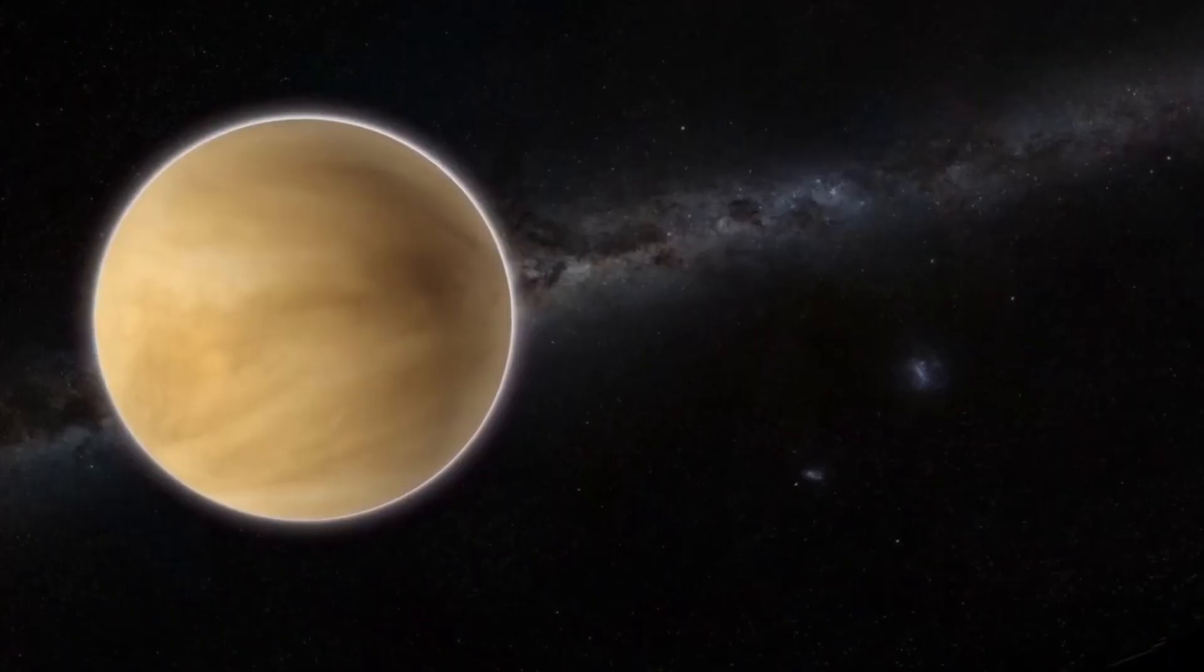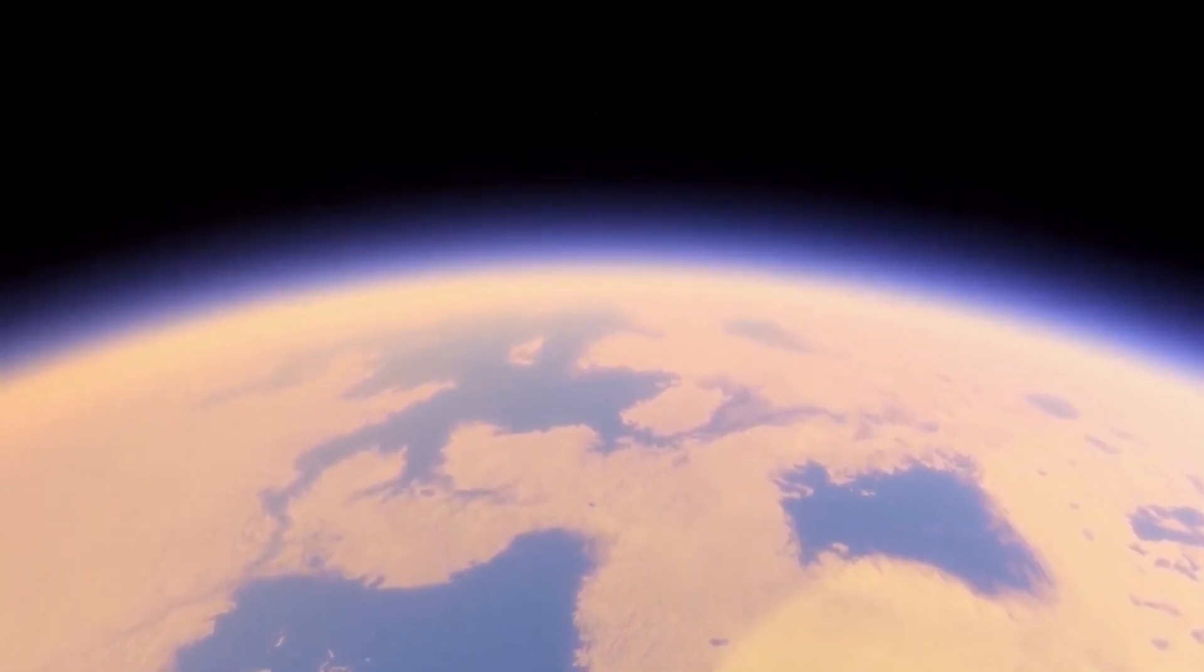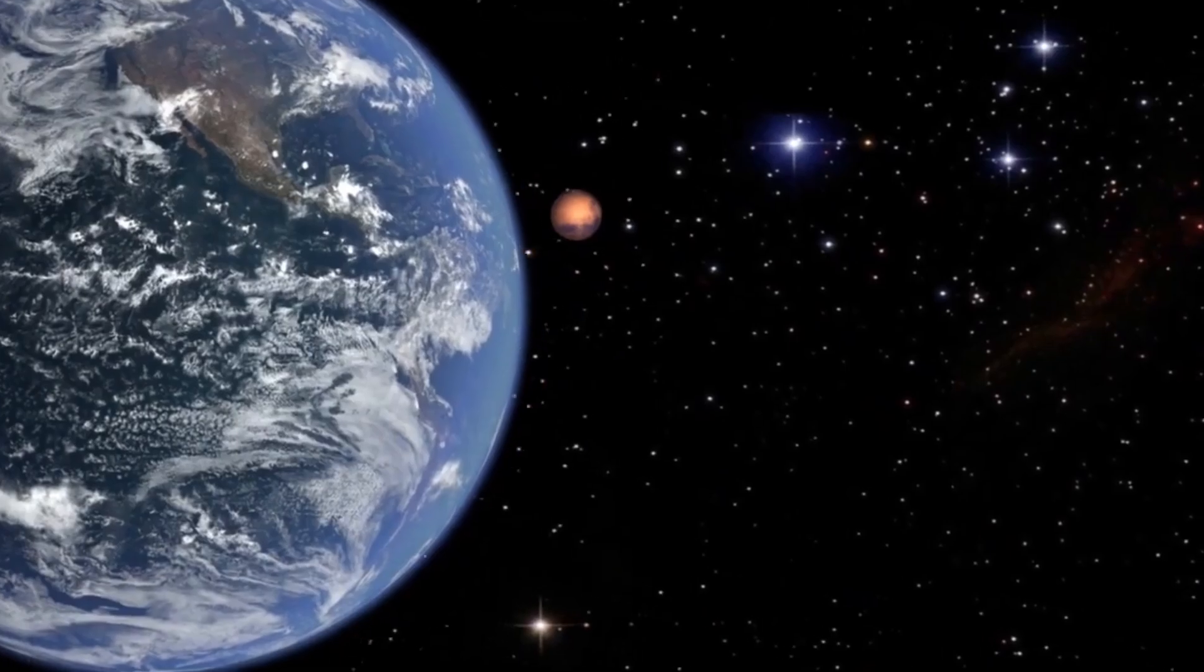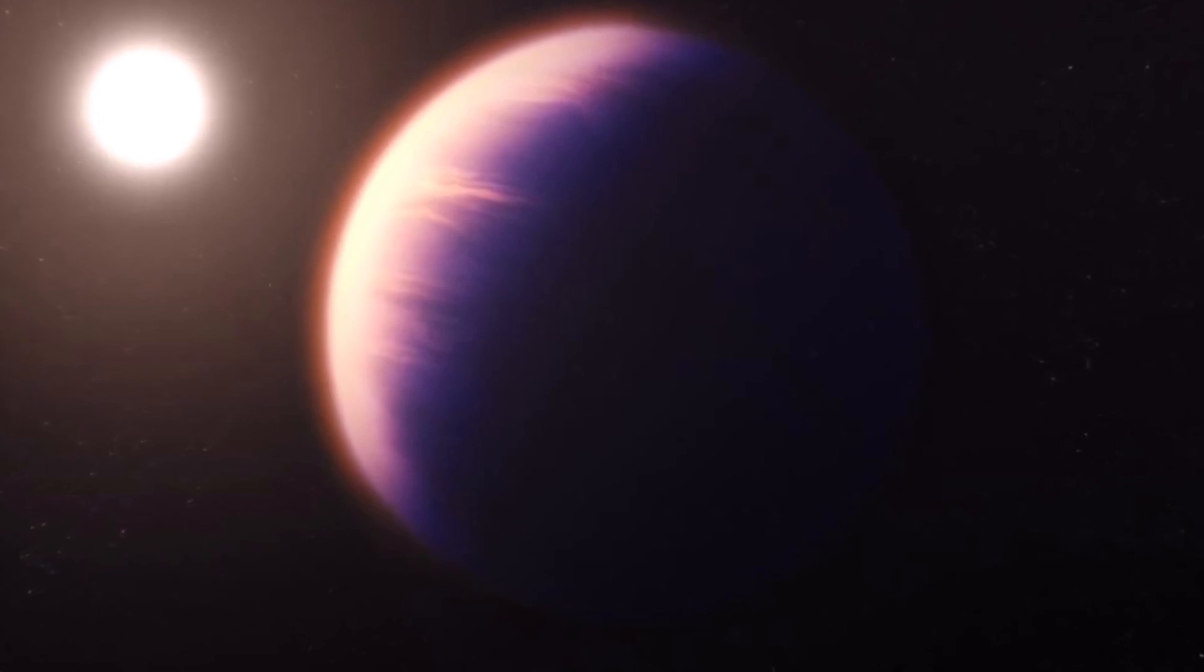By utilizing Webb's primary camera and two spectrographs, researchers have made a groundbreaking discovery. They identified carbon dioxide in the atmosphere of an exoplanet for the very first time. This distant world, however, has a thick atmosphere. It's primarily composed of dense clouds containing sulfur and silicates, including sulfur dioxide.